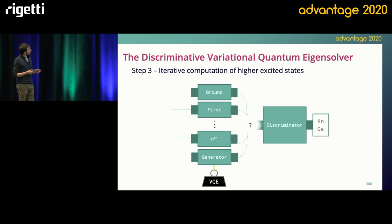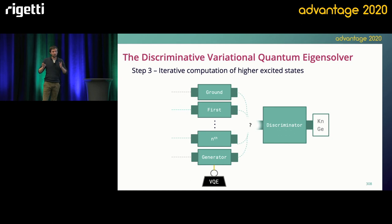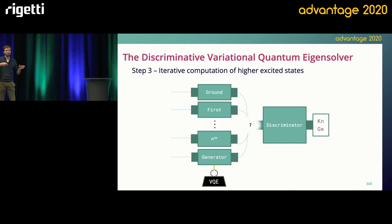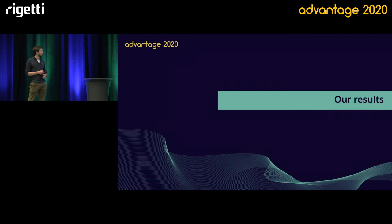You can do this for any number of excited states. Once you've computed the first excited state, you just add a new quantum circuit and ask the discriminator to distinguish between the known states and the generated state — the process is exactly the same. You just increase linearly the number of terms you have to compute in the discriminator cost function.